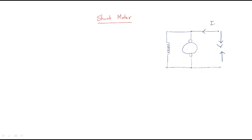The supply voltage carries the load current, which is divided into two parts. One current enters the armature — the motor is always represented with M — and the remaining current goes to the field. The field is connected in parallel, which is why it is called the shunt field. We name it the shunt field resistance RSH.